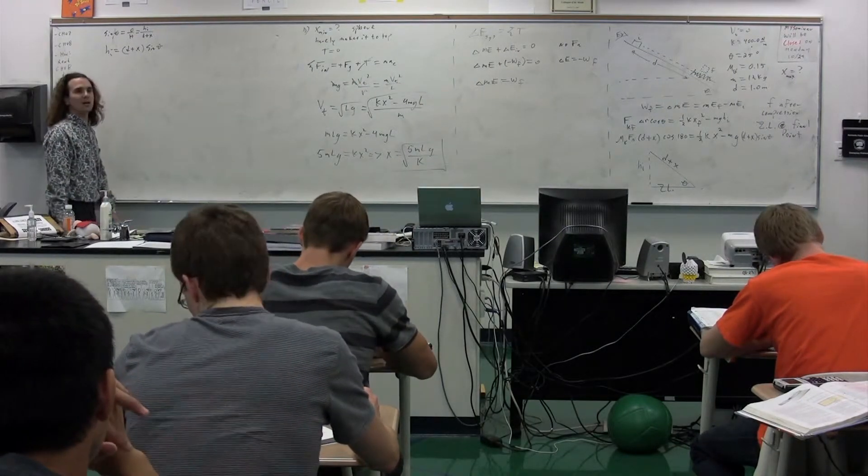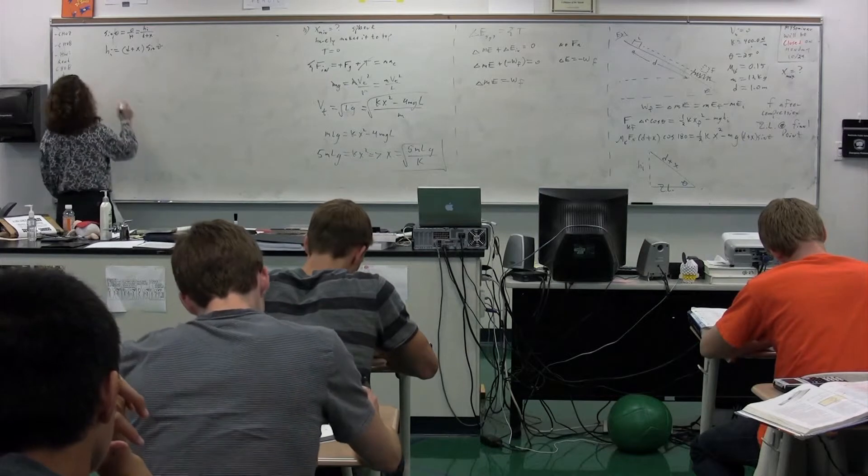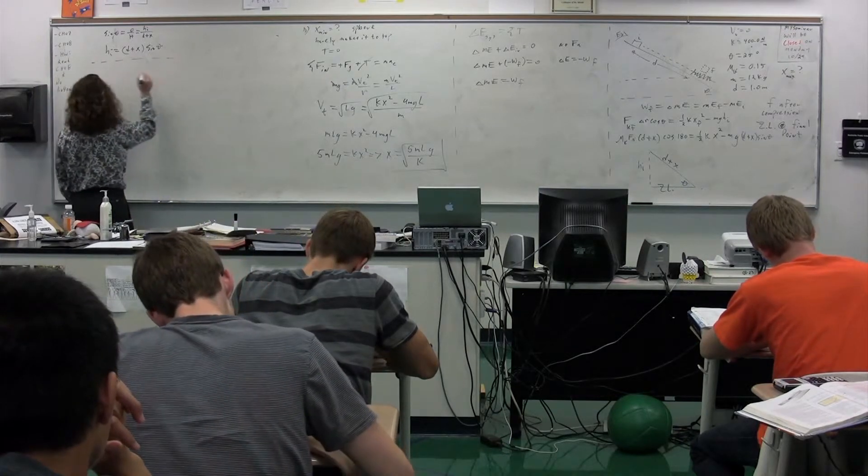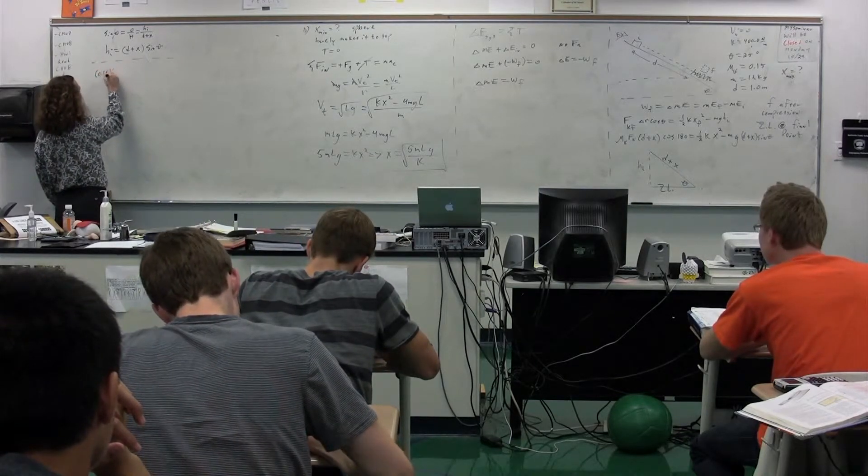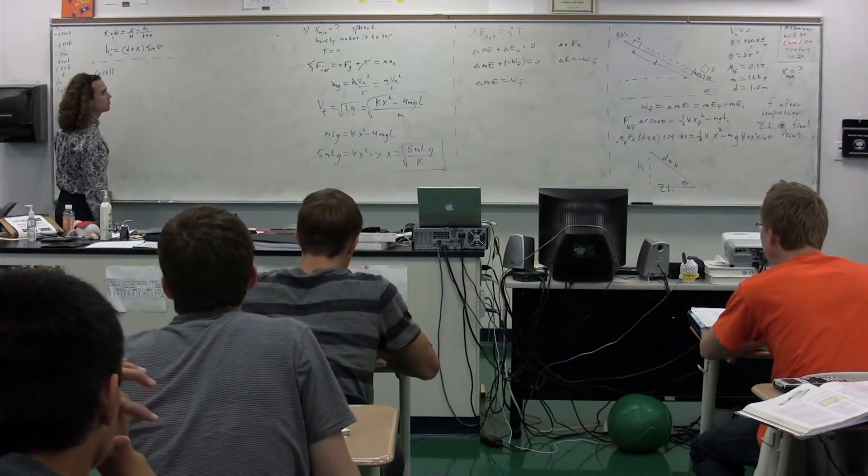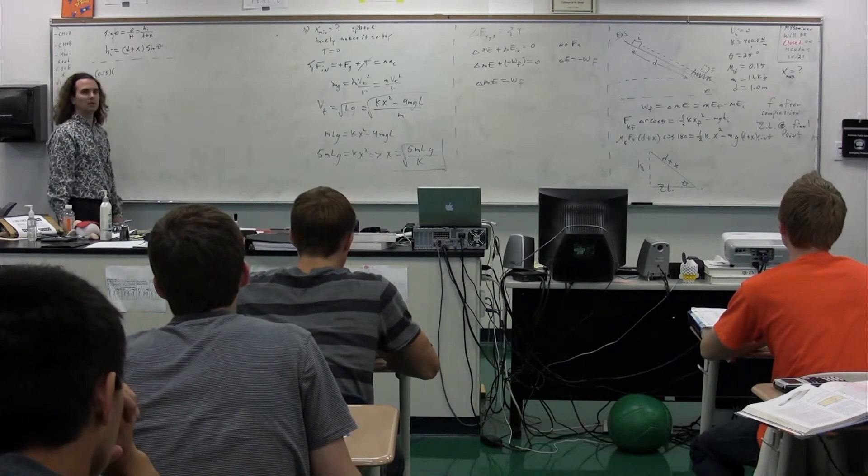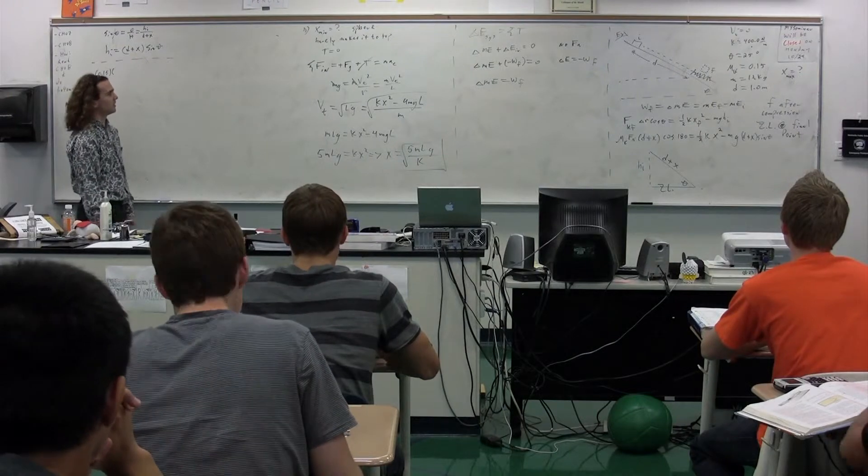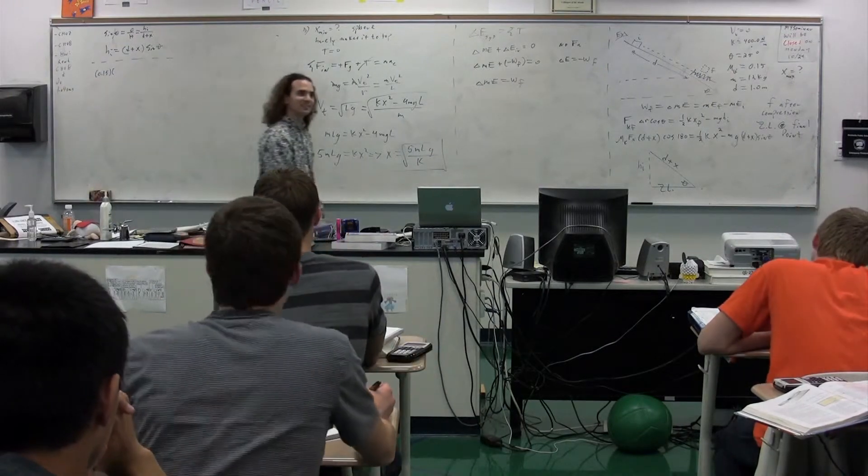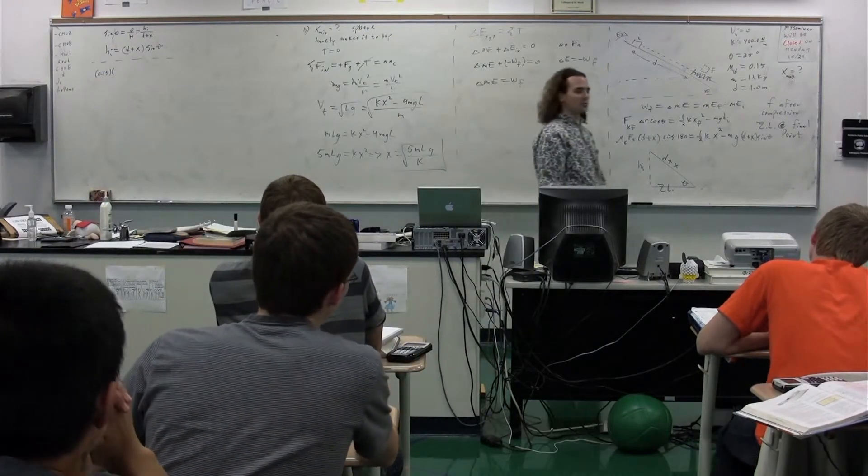From left to right, give me all of the numbers. Travis, mu K. 0.15. 0.15. Force normal. Oh. Force normal. We have to figure out force normal. How are we going to figure that out, Jenkins?